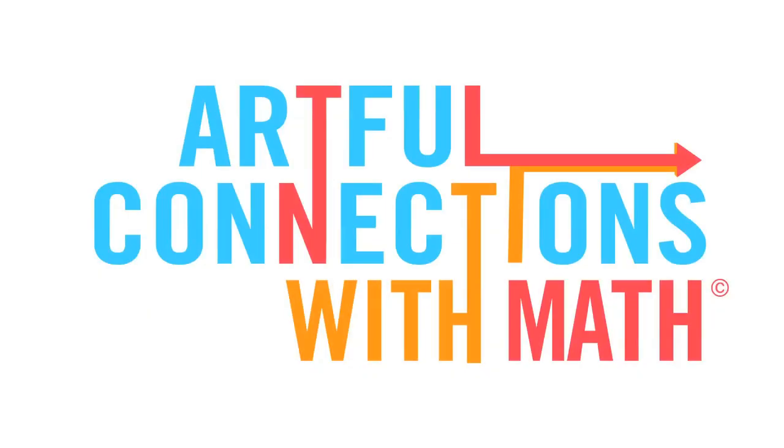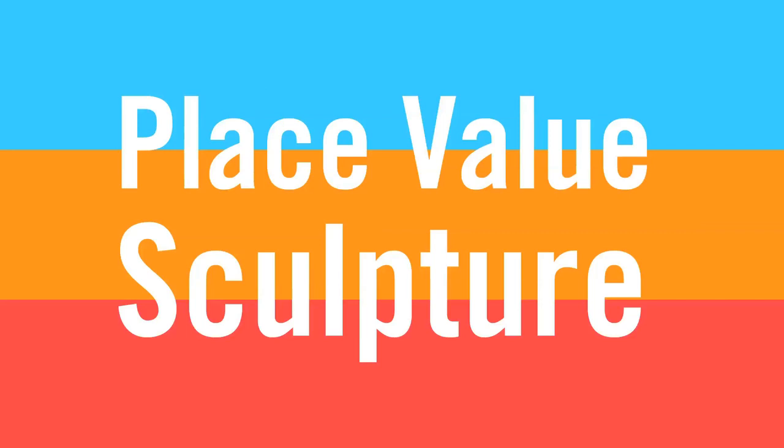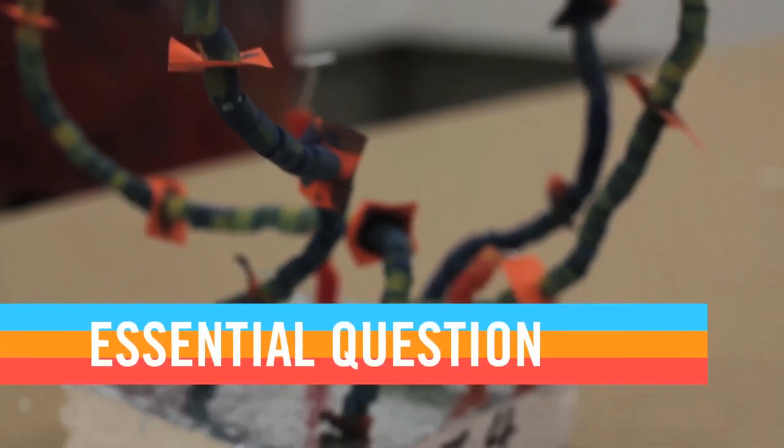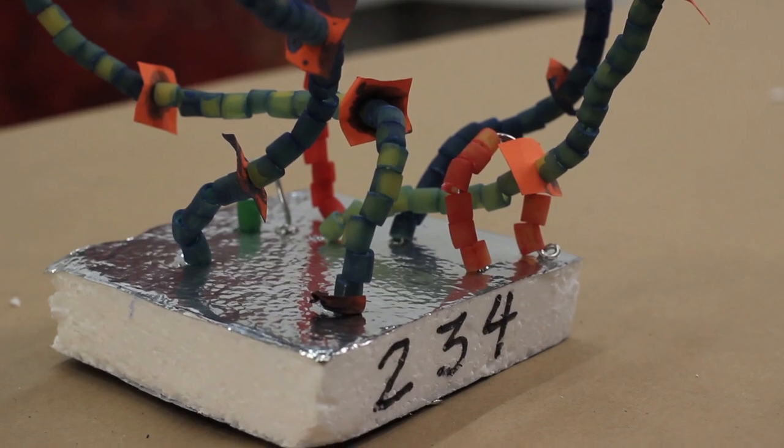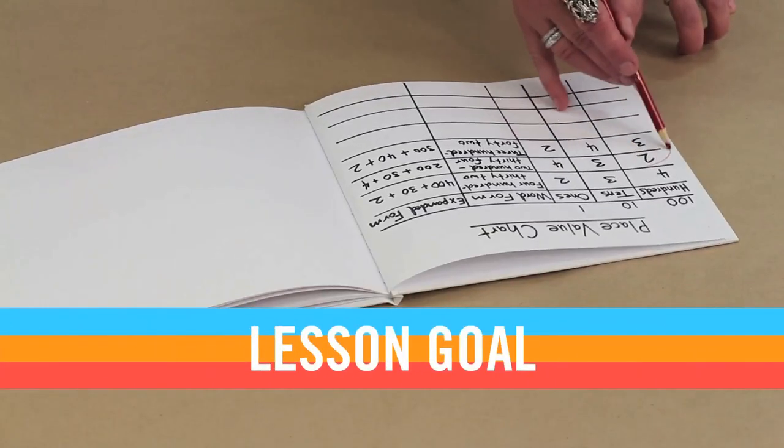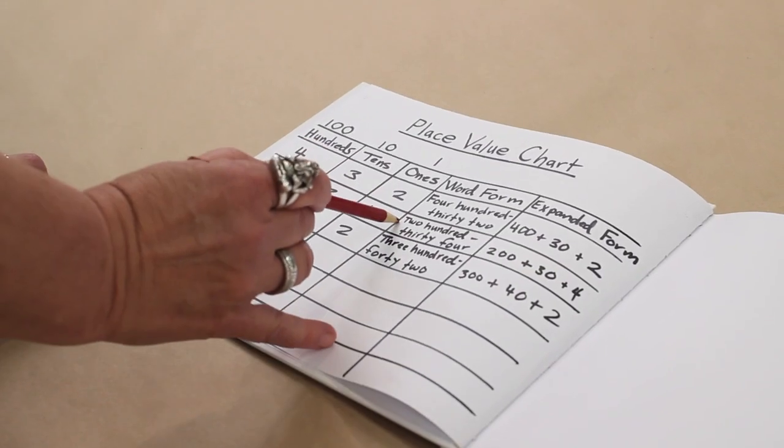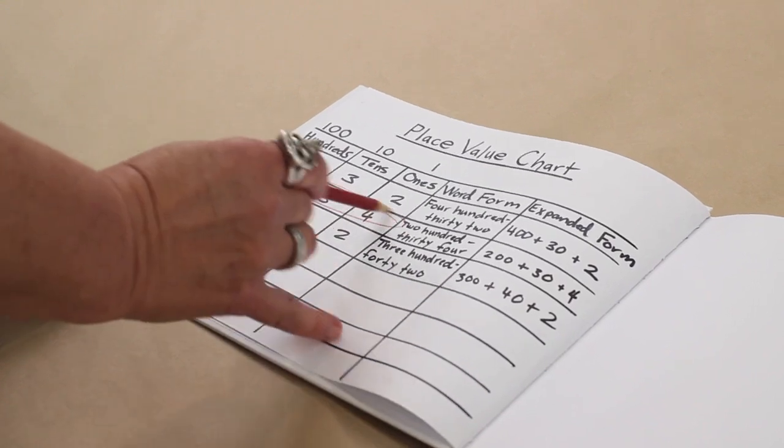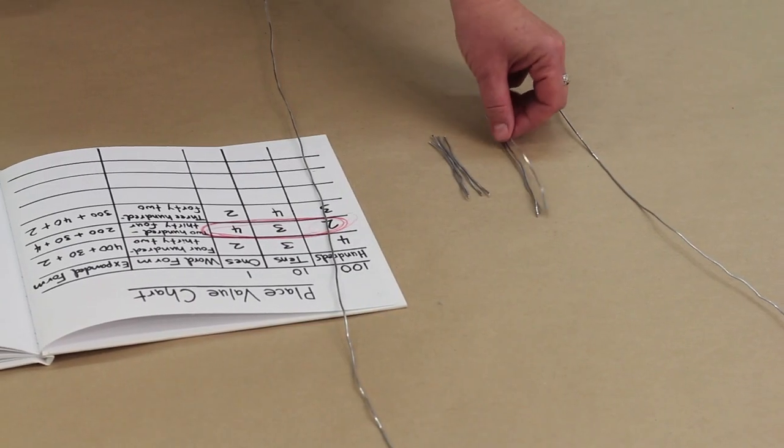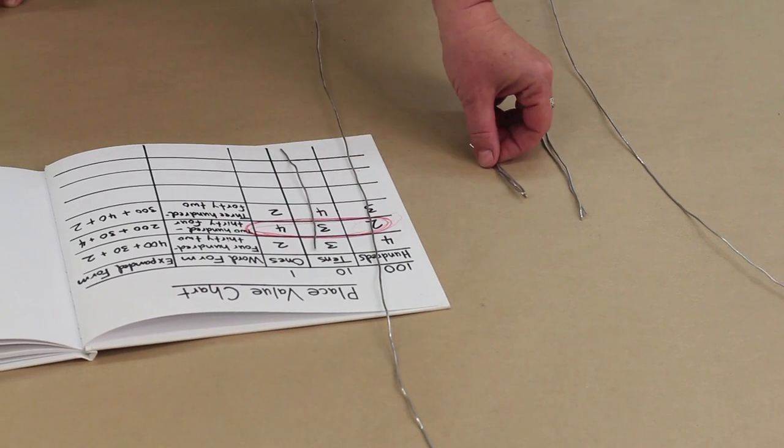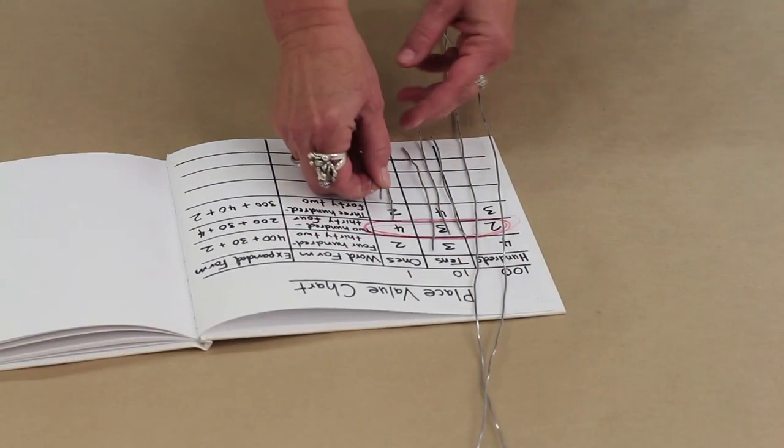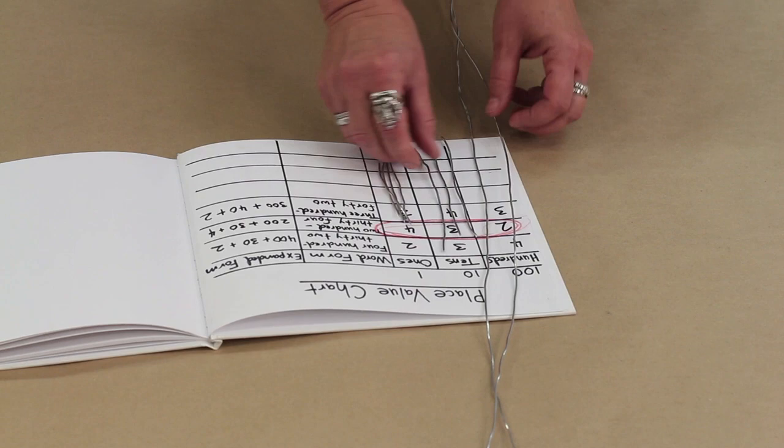Welcome to Artful Connections with Math, Place Value Sculpture. How can we use sculpture to depict a number? This lesson's goal is for students to group objects in ones, tens, and hundreds in order to count to a three-digit number. They'll use color and length to visually differentiate between place values, and create an abstract wire sculpture that depicts their three-digit number.